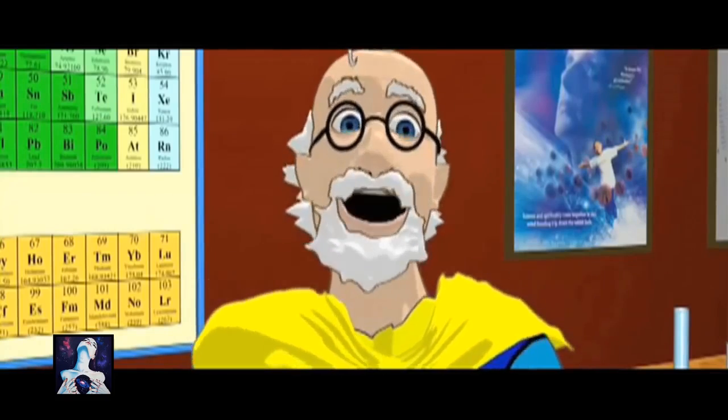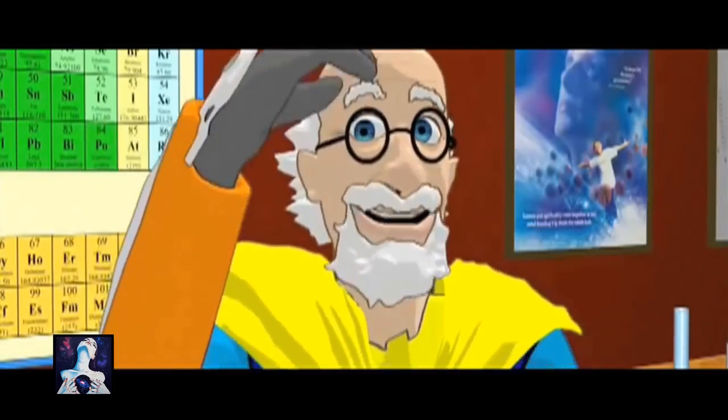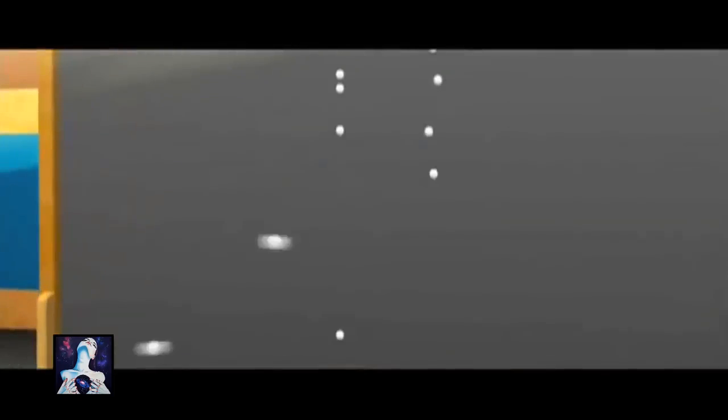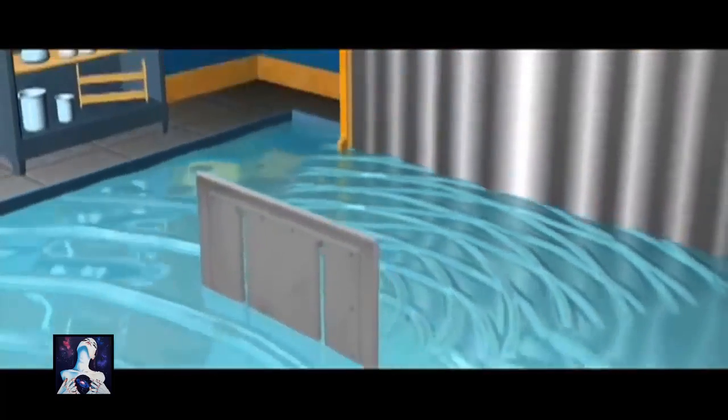So, when we throw things, that is matter, through two slits, we get this: two bands of hits. And with waves, we get an interference pattern of many bands. Good so far.